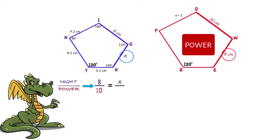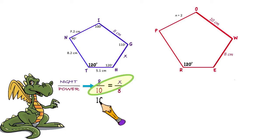And the 8 is in the polygon power, so we would put it across from the 10. Now we can solve for the length of X by cross-multiplying. So we get 10X equals 64, or X equals 6.4. So side GH is 6.4 centimeters long.